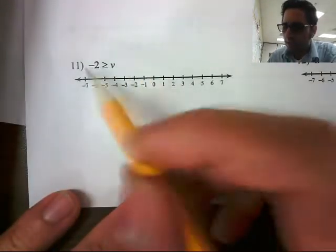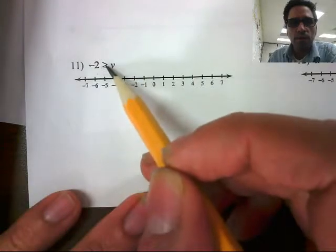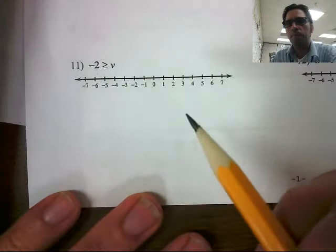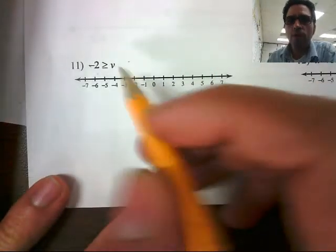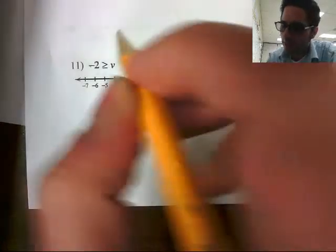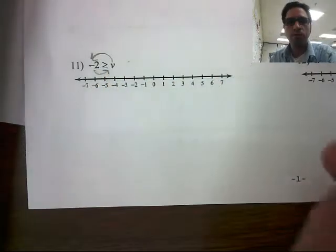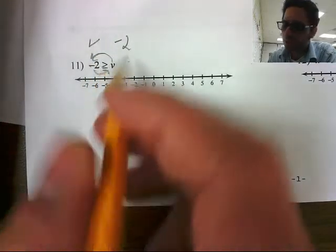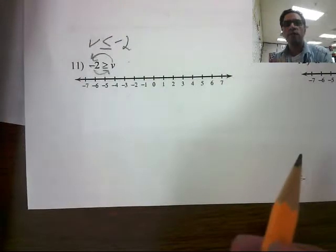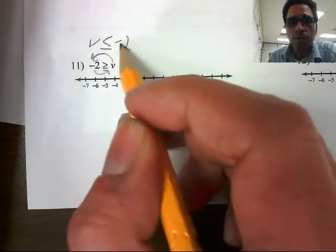All right, this reads negative 2 is greater than or equal to v, or v is less than or equal to negative 2. Now, when you see an inequality where the variable is on the right-hand side, you can rewrite this so the variable is on the left side. That will make it easier to read. So we're going to switch our variable over here and our number that we're comparing it with over here. So that puts v on this side and negative 2 on this side. Now, when we switch them, we also have to flip the inequality sign, just like so. So now this reads, v or any number less than or equal to negative 2.